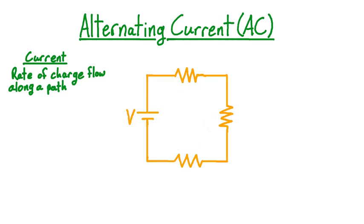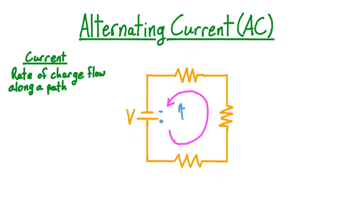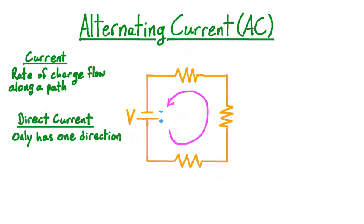If we introduce a source of electromotive force, or EMF, to this circuit like a cell of voltage V, the EMF provided by the cell will drive a current in the circuit. The conventional current will have a clockwise direction, because conventional current is defined as going from the positive terminal to the negative terminal of a cell. If we physically remove and turn around the cell, we reverse the terminals, and the direction of the current becomes counterclockwise. In both examples, the current is a direct current, because it only has one direction, as determined by the orientation of the cell.